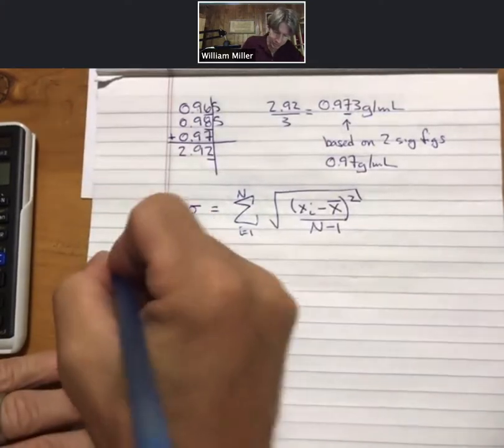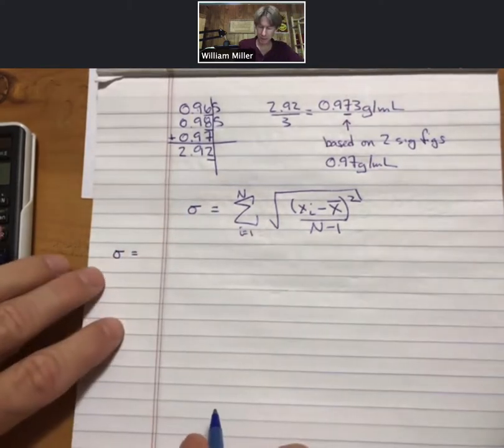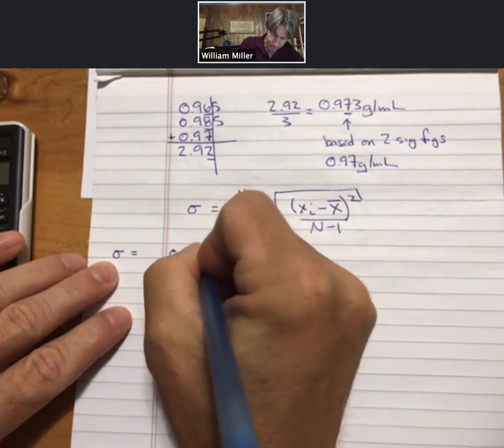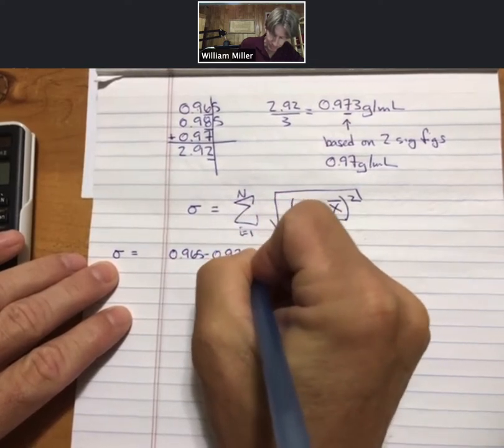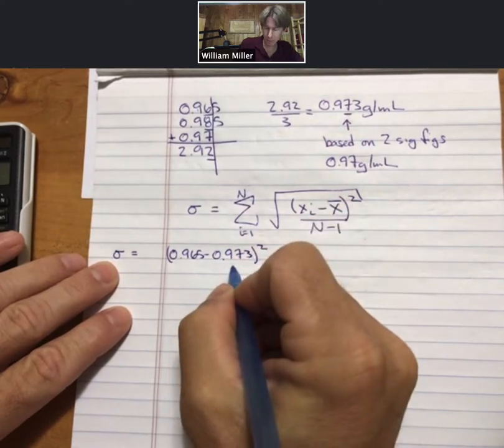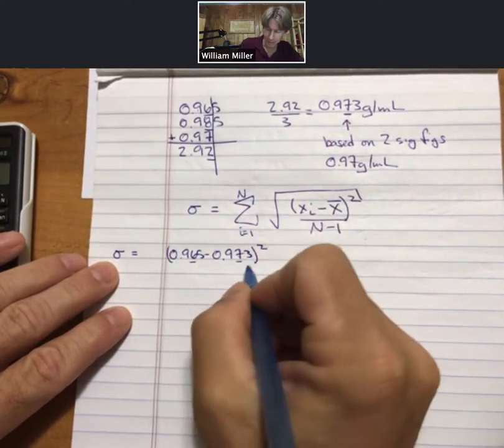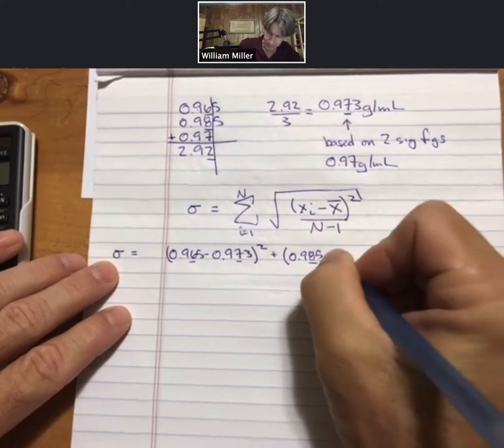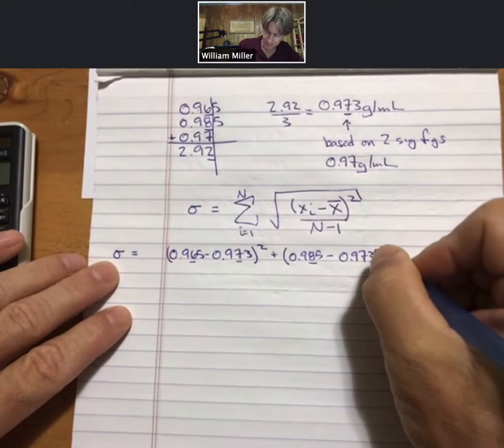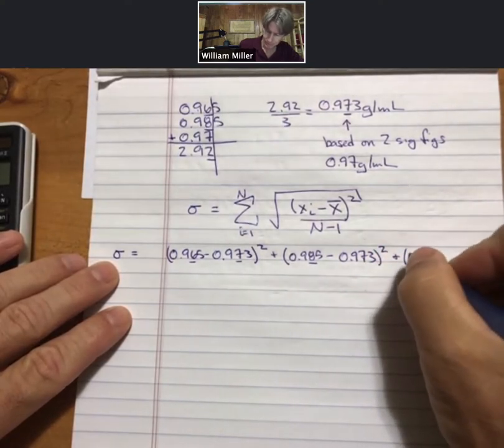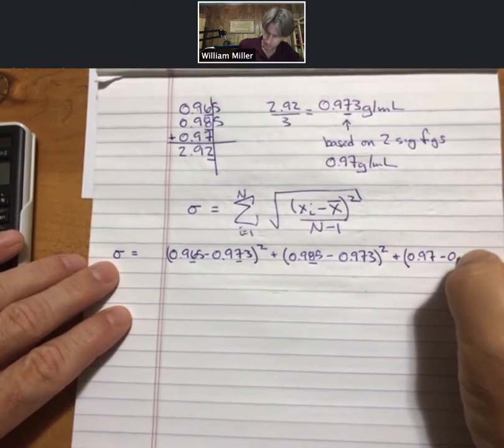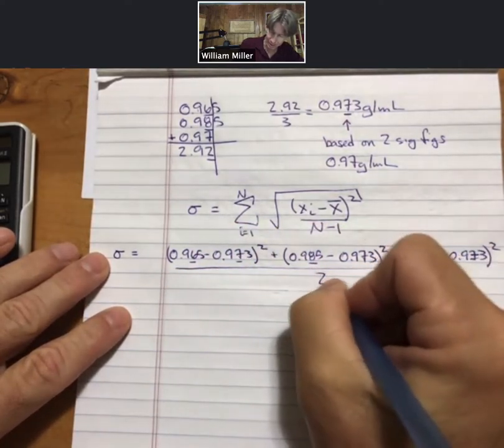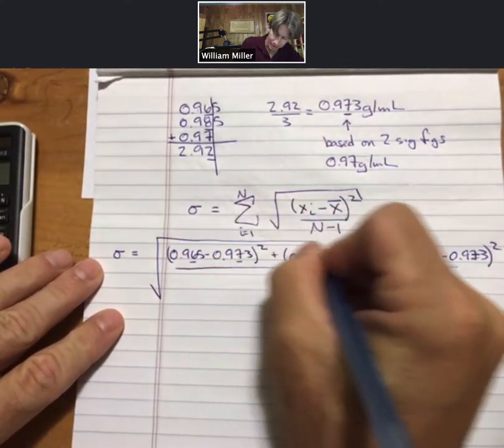So let me set this up for you. It's going to take a little bit of space here. So for standard deviation, which is sigma, it's going to take my first data point, subtract off the average and square it, plus the same thing. And I will drop my units for this. The whole thing divided by n minus 1, 3 minus 1, which is 2, and then square root the whole thing.